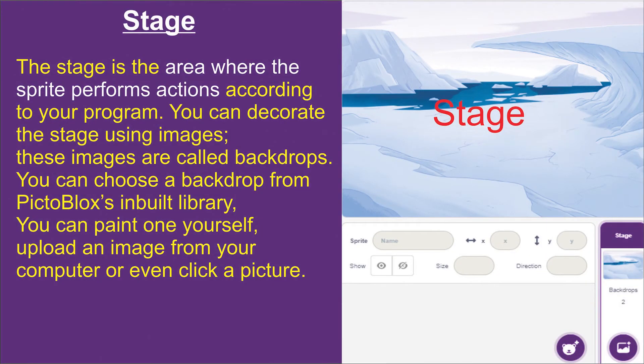Then, what is a stage? A stage is the area where the sprite performs actions according to your program. You have to drag and drop codes, and the moment you put in codes, the sprite will perform certain actions based on those codes. You can decorate the stage using images — these images are called backdrops.